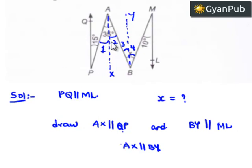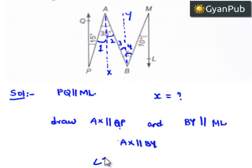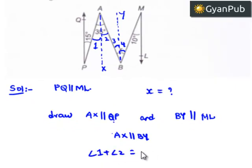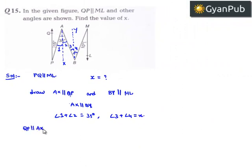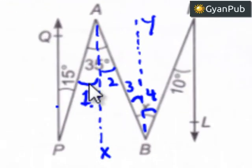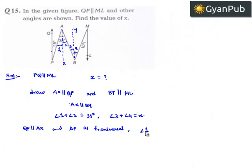As we have named angles 1, 2, 3, and 4, angle 1 plus angle 2 is equal to 35 degrees, and angle 3 plus angle 4 is equal to x degrees. Let us consider QP is parallel to AX with AP as transversal. Therefore, angle 15 degrees and angle 1 are alternate interior angles, so they will be equal. Therefore, angle 1 is equal to 15 degrees.